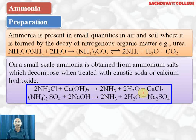Ammonium sulfate can also be treated with sodium hydroxide to give ammonia plus water plus sodium sulfate. But the first method — heating slaked lime with ammonium chloride — is the most common method for preparation of ammonia in the lab. Ammonia gas is dried over calcium oxide because calcium oxide is basic in nature and does not react with ammonia.